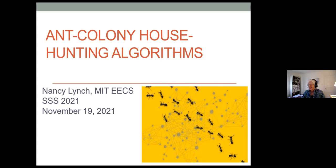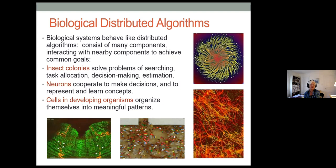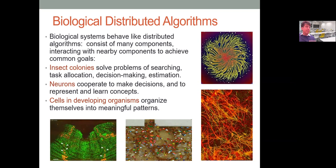So I'm talking about the area of biological distributed algorithms. Biological systems behave like distributed algorithms in many ways — they consist of many components that interact to accomplish something. Good examples are insect colonies, which solve problems like searching for food, task allocation, making decisions, and estimation. Neurons in the brain cooperate to make decisions and to represent and learn concepts.